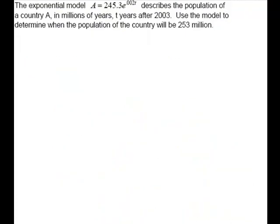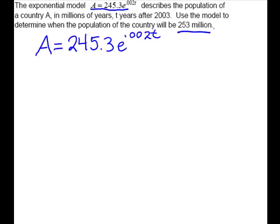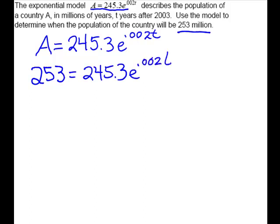We'll look at one more example. The exponential model A equals 245.3 e to the .002t describes the population of a country A in millions, t years after 2003. Use the model to determine when the population of the country will be 253 million. So this will be our model. We want to know about a future population, so this is going to be the A: 253 million. And so we are again looking for t.